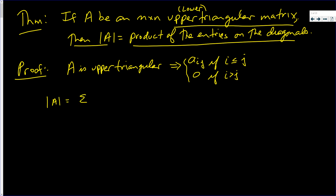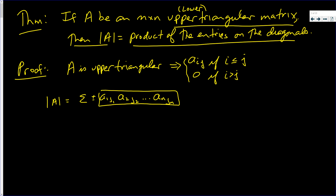In the determinant, the determinant of A by definition is the summation of plus or minus a_1j1 times a_2j2, all the way up to a_njn. Let's consider a_1j1 all the way down to a_njn. Remember, this is a summation over all permutations of 1 through n, where j1, j2, up to jn is one such permutation.